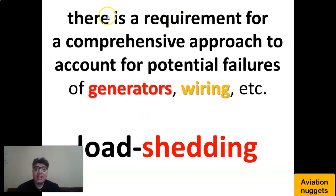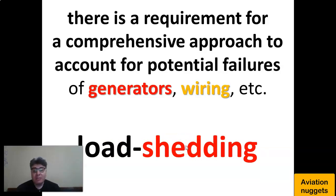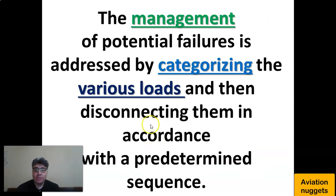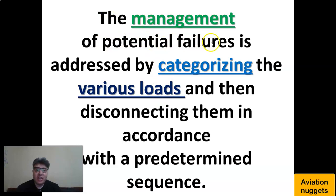There is always a legal requirement for a comprehensive approach to account for potential failures, like generator failure or wiring failure — this is what the load shedding process addresses. Load shedding may be done automatically or manually by the pilot. The management of potential failures is addressed by categorizing the various loads and giving them a hierarchy: which loads are most needed, which are least needed, which are very important, and which are not.